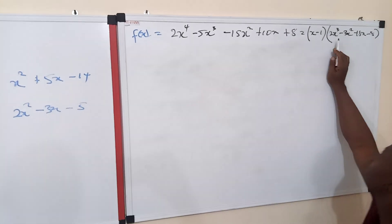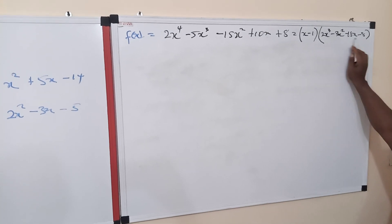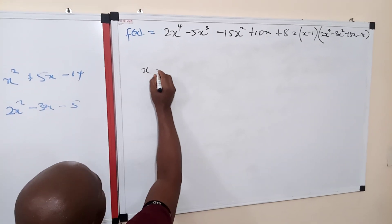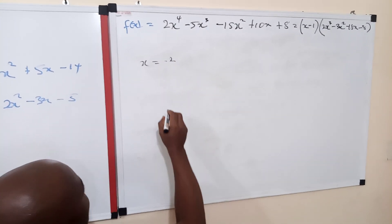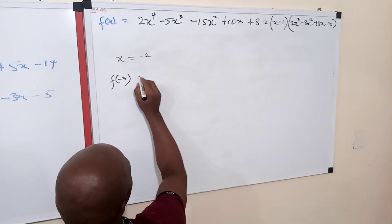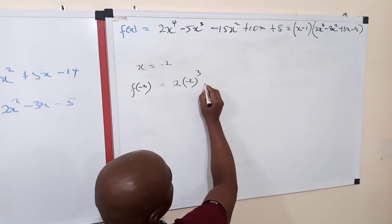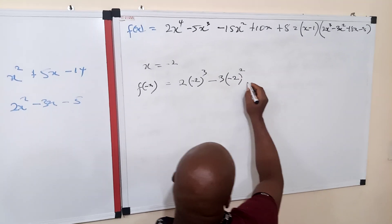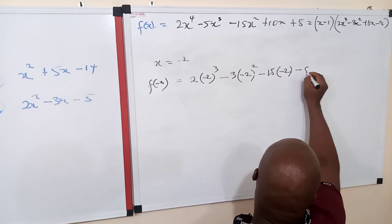Our interest now is to see, first of all, if we can find another term that will render this entire cubic equation to zero. Let's consider evaluating x at negative 2. In that case, we have f of negative 2 of that system: 2 times negative 2 raised to power 3, minus 3 times negative 2 raised to power 2, minus 18 times negative 2, minus 8.